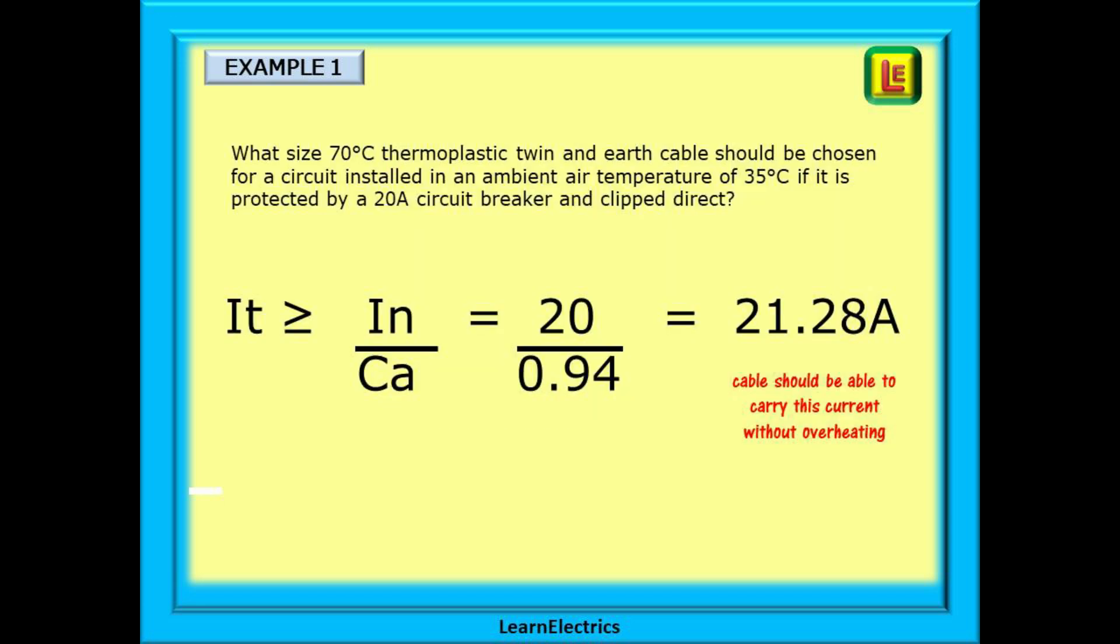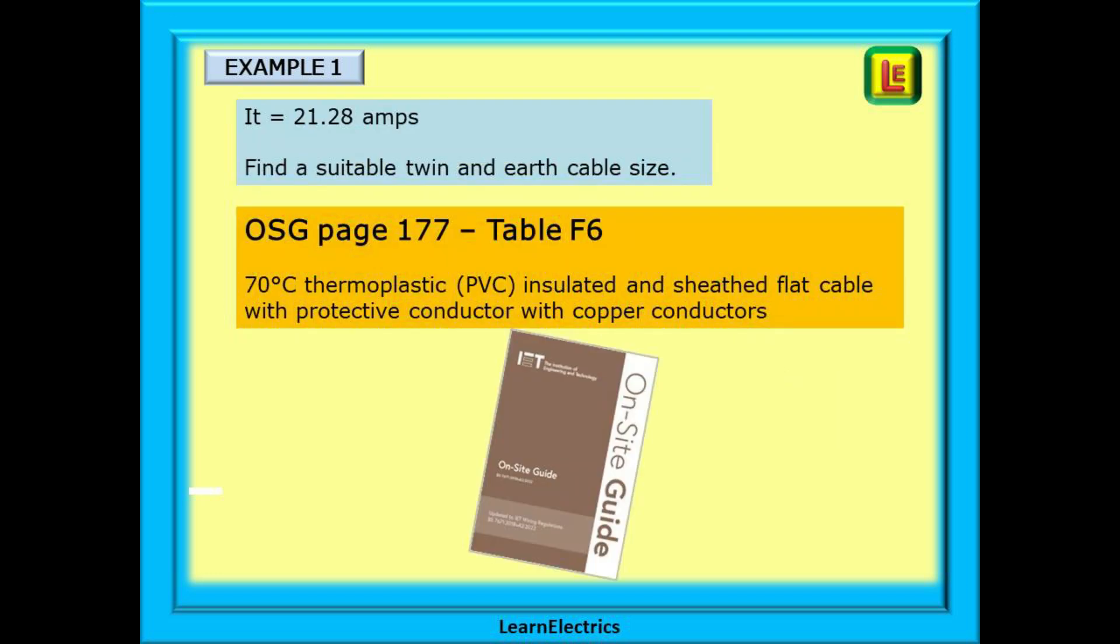So follow this through. 20 divided by 0.94 is 21.28 amps. The cable we choose should be able to carry this 21.28 amps of current and chosen correctly, it will not overheat under these conditions. So we now know that IT is 21.28 amps and we must find a suitable size cable.